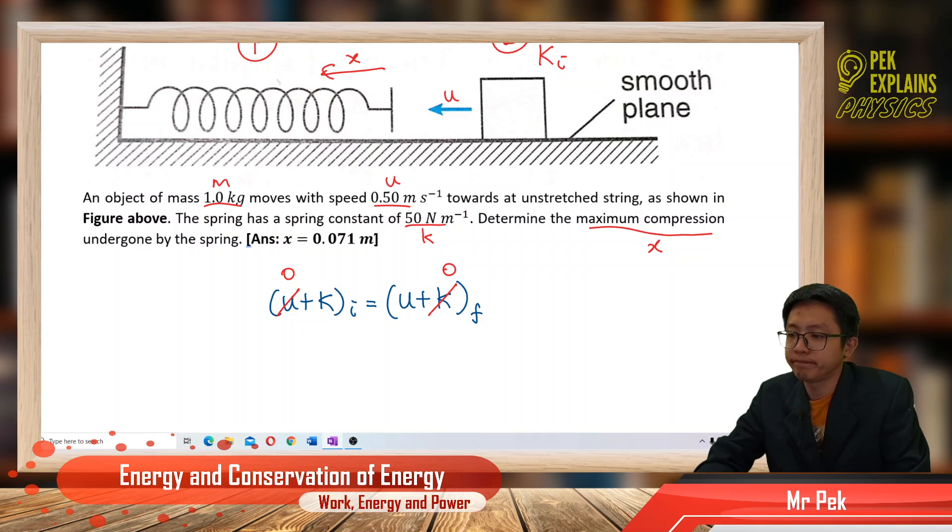What's the formula for kinetic energy? It is ½mv². The kinetic energy of the block has converted to the elastic potential energy, ½kx², in the spring.